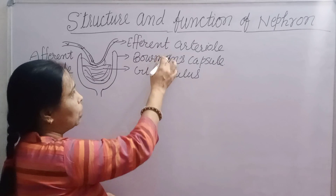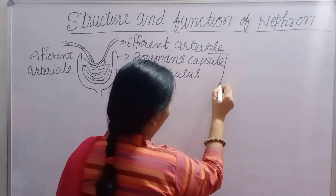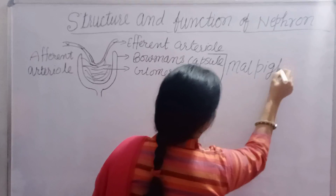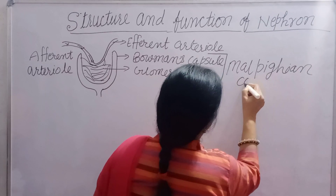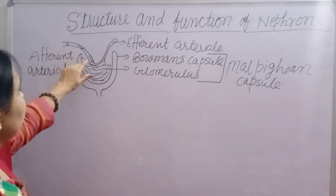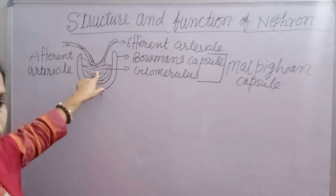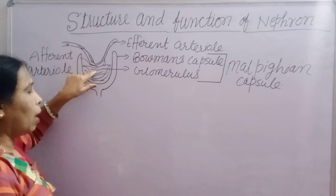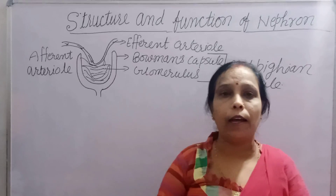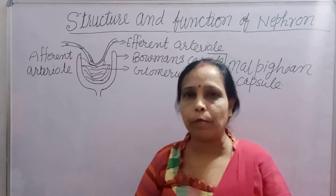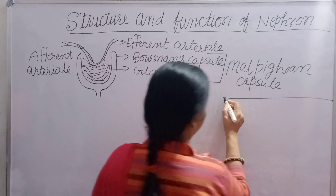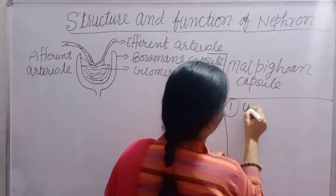One thing to notice here: Bowman's capsule and glomerulus together are referred to collectively as the Malpighian capsule. Blood comes into the glomerulus with great force, causing the impurities in the blood to be filtered here. The first function is ultra-filtration.